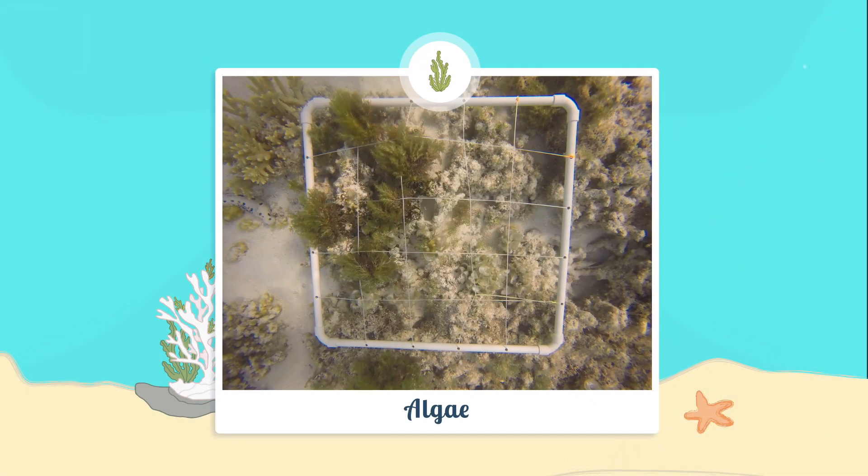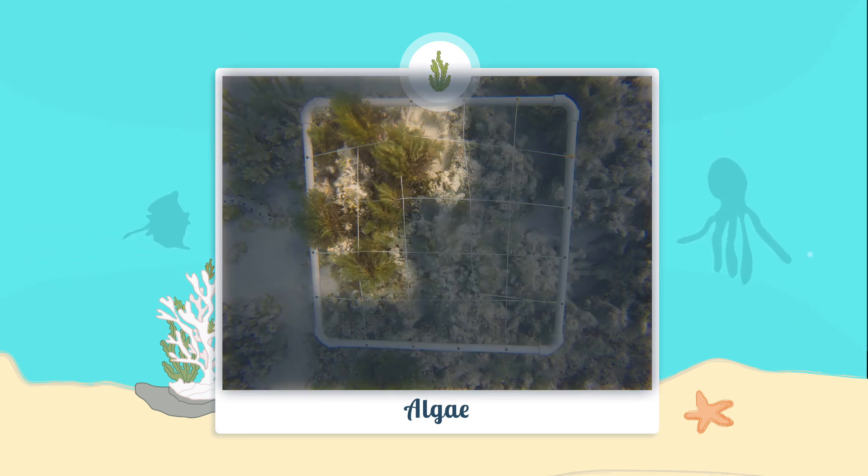We decide whether each square is mostly coral or mostly algae. There are a couple of different types of algae in this picture. So to keep it simple we'll just count the squares that have the larger green algae like you can see here. And we need to do this for each sample spot we measured.